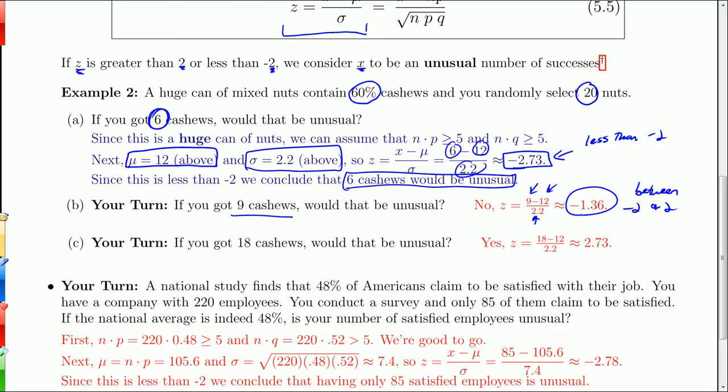And remember we're expecting about 12. What if we got 18? Would you consider yourself unusually lucky here? Well, sure, because when you plug in x equals 18, 18 minus mu over sigma is 2.73. That indeed is an unusual number of cashews. It's on the high end, so it's much more than you'd expect. So this is greater than 2. So that's actually pretty easy to do, much easier than adding up all those probabilities from the binomial tables.